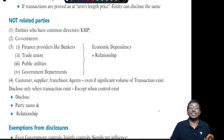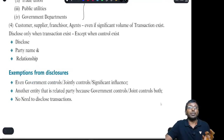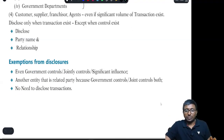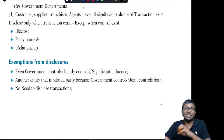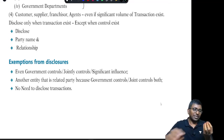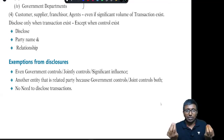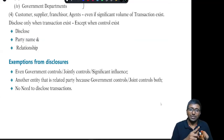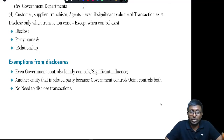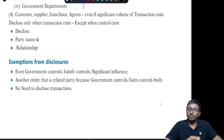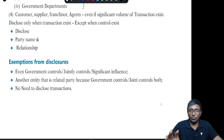Some exemptions are given with respect to government companies — where the government has control, joint control, or significant influence. If one government entity is transacting with another government entity controlled by the same state or central government, these transactions need not be disclosed as related party transactions, but light information should be provided. If you feel this video is helpful, please share it with your friends. Thank you very much and wish you the very best.